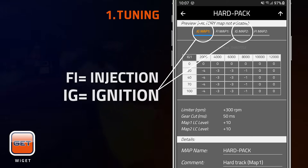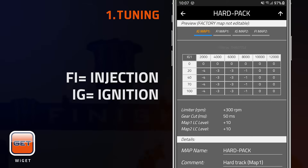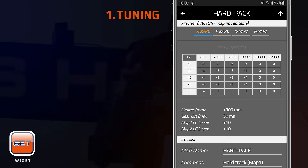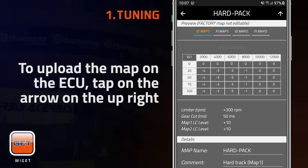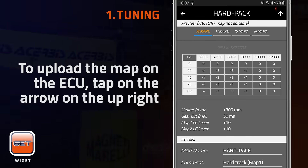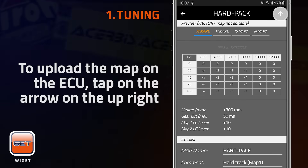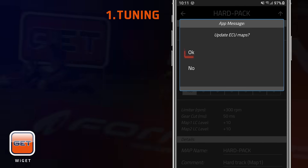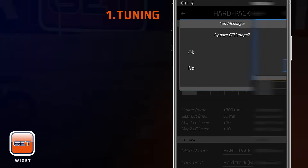Please remember that Factory Maps cannot be modified. To upload the map on the ECU, tap on the arrow on the upper right of the screen and then on OK.